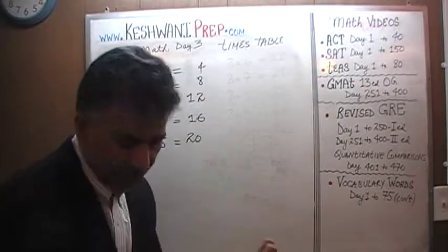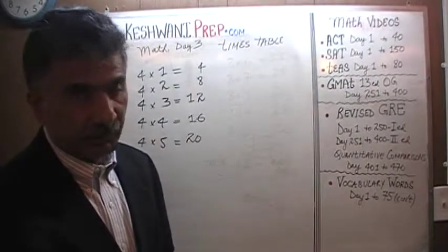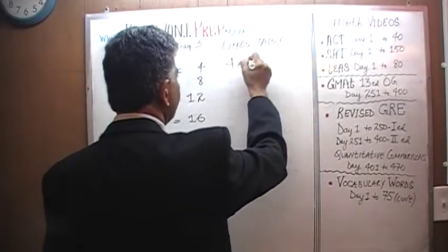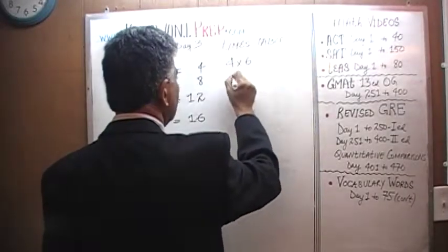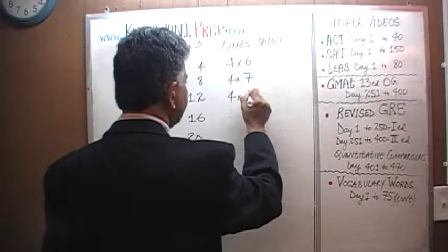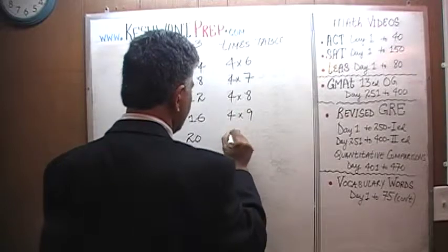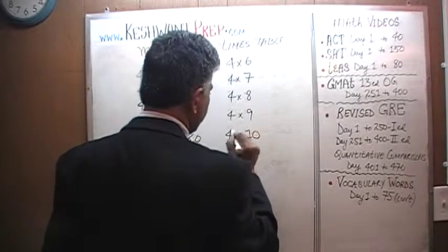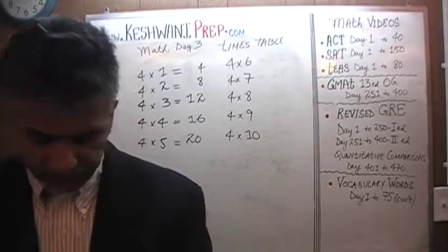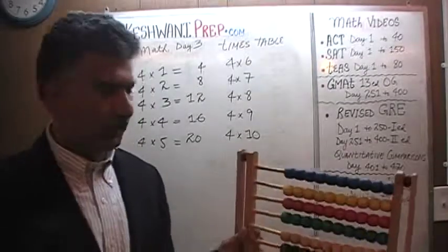Now let's do the second half of the table. Four sixes are, four sevens are, four eights are, four nines are, and finally four tens are. So now we have to count by sixes.